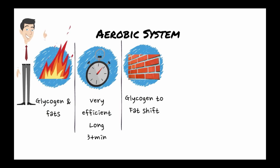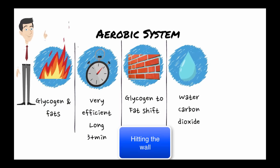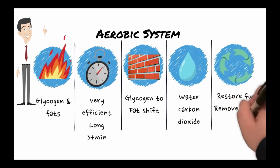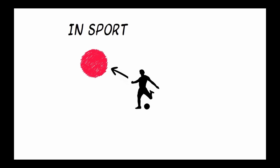The main cause of fatigue occurs when the system shifts from using glycogen to using fats as its source of fuel. The main byproducts are water and carbon dioxide, and the process of recovery is about the restoration of fuel and the removal of waste. The rate at which that occurs is 24 to 48 hours.